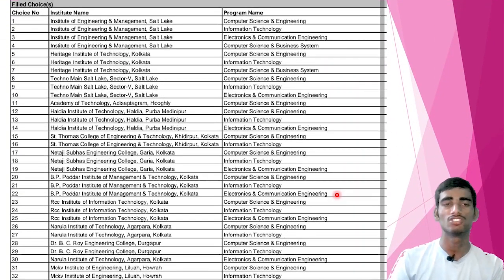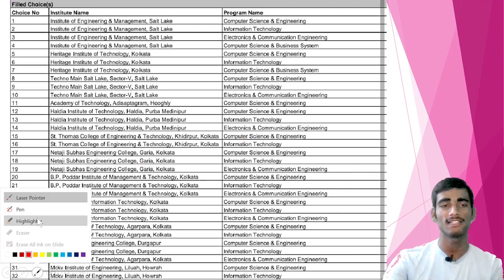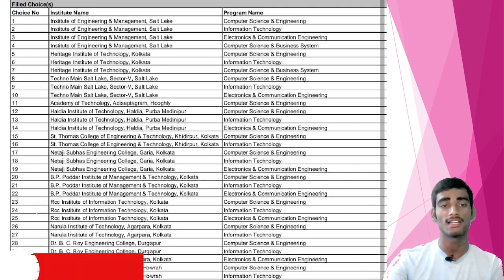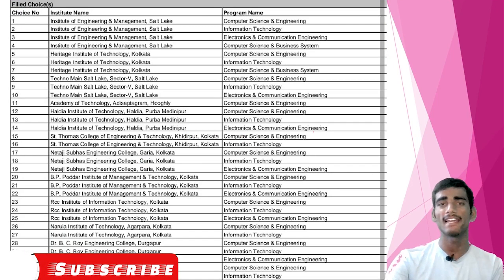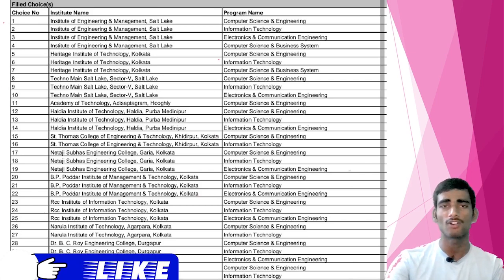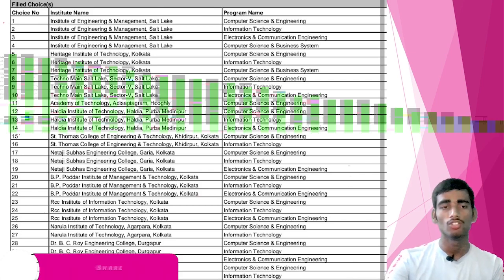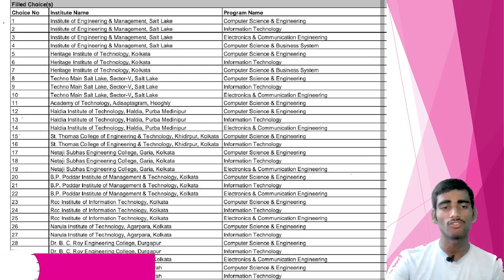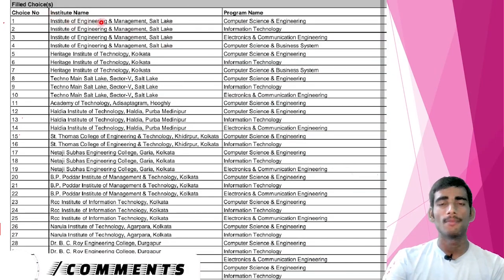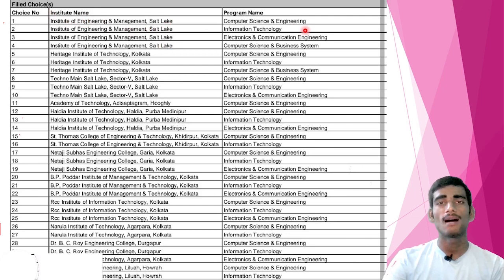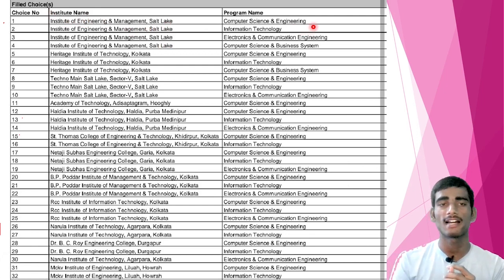This is the complete list for under 6 lakh rank. If your rank is under 6 lakh, then your list should look something like this. Again, I am saying that this may vary from candidate to candidate. So you can swap and change your priority order according to your preferences.